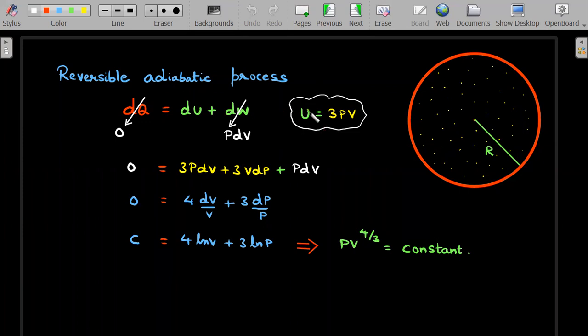Since it is adiabatic, which means there is no heat supply from outside, right? dQ should be zero in every step of that expansion, and dW should be simply PdV. It's a simple logic. So if I differentiate this dU using this one, this would become 3PdV + 3VdP, and this PdV as it is borrowed. You rearrange, you will get 4dV/V + 3dP/P = 0.